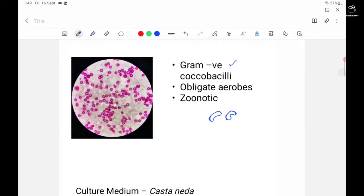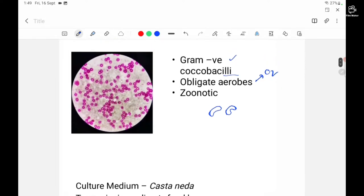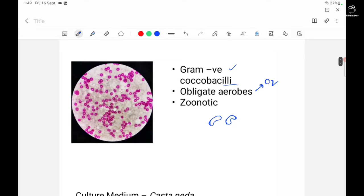These are obligate aerobes, meaning they require oxygen for vital functioning and metabolizing fats and carbohydrates. These are zoonotic, meaning the transmission of infection is from animal to human.